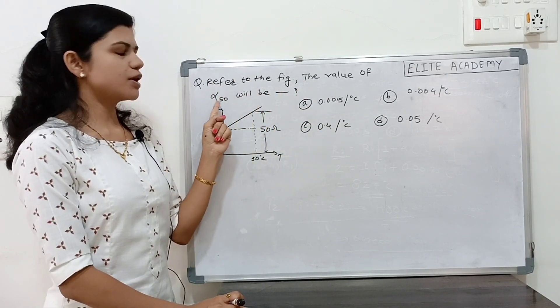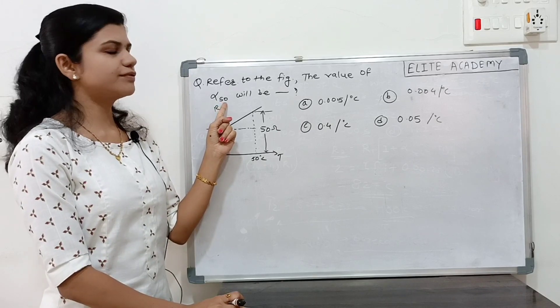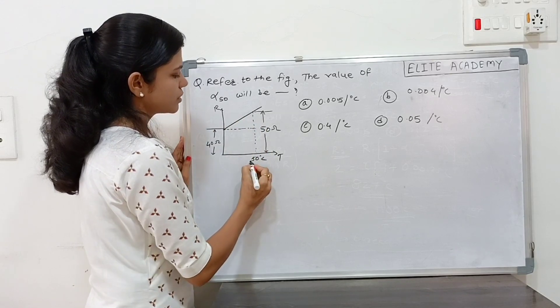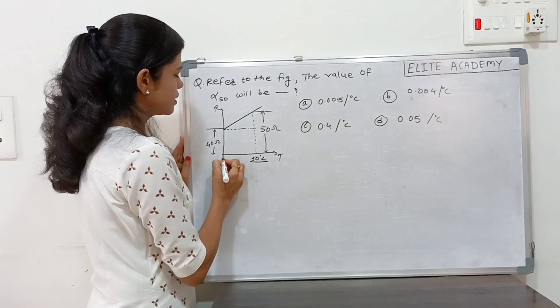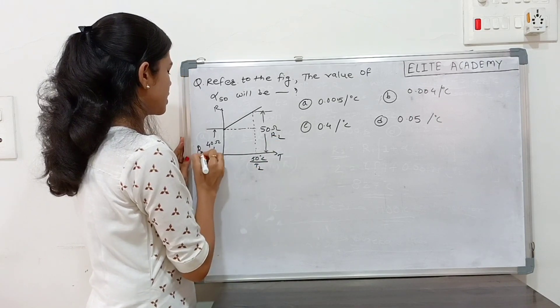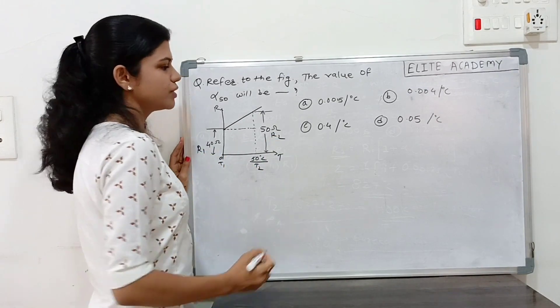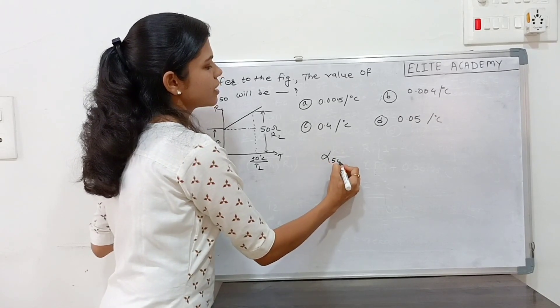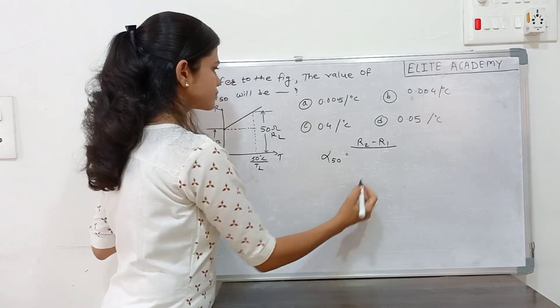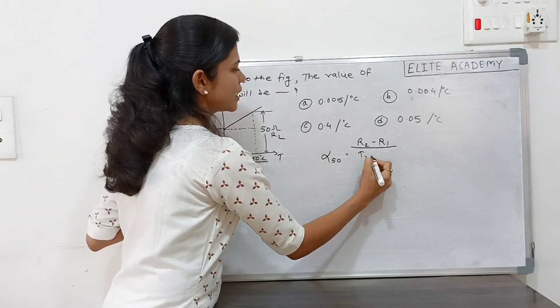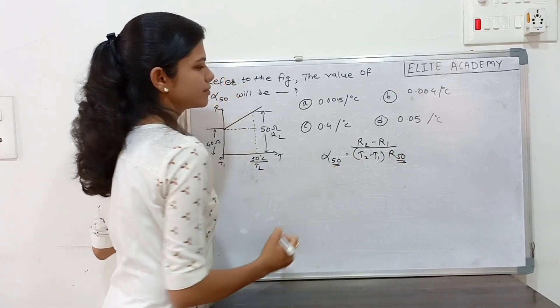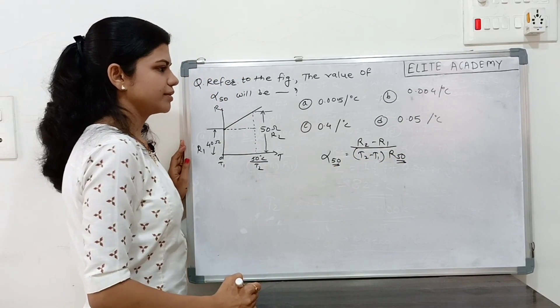Next we have to find out the TCR at 50 degree Celsius. So therefore from this figure T2 is given, T1 is 0. This is R2 and this is R1. We know the formula for alpha R2 minus R1 upon T2 minus T1 into R1.